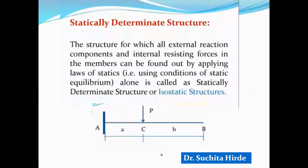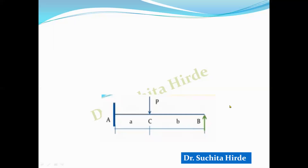Now, let us see what is meant by a statically indeterminate structure. Consider the cantilever beam again, but this time we have provided one more support at B, at the free end, which is called a prop. This structure is called a propped cantilever. In this case, the total number of reactions is 3 at the fixed support plus 1, giving 4 total reactions, but the number of equations is only 3. Therefore, it is not possible to calculate all the reactions using conditions of equilibrium alone, and it is also not possible to calculate the shear force or bending moment since we cannot determine all the reactions.